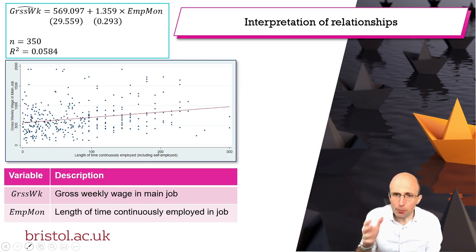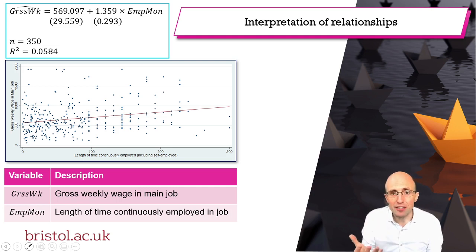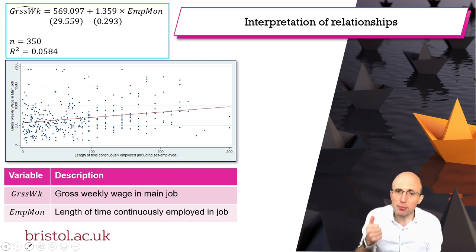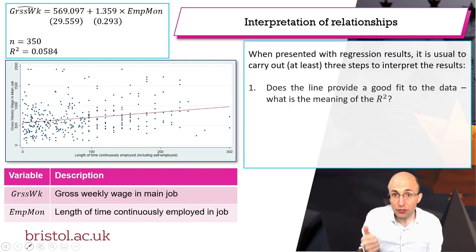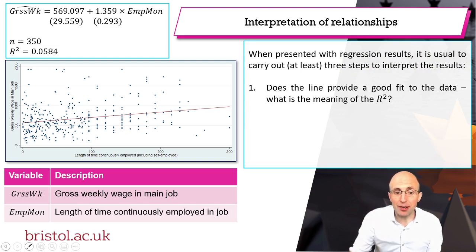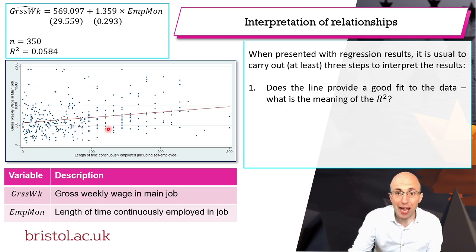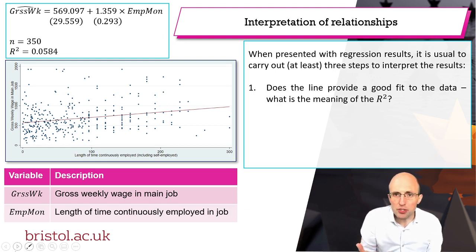I'm going to suggest that there's an algorithm you can follow whenever you're asked to carefully interpret regression results, and this algorithm is made up of three steps. The first step is to ask: how well does the estimated line fit the observed data? In other words, what does the R-squared from the regression actually mean?